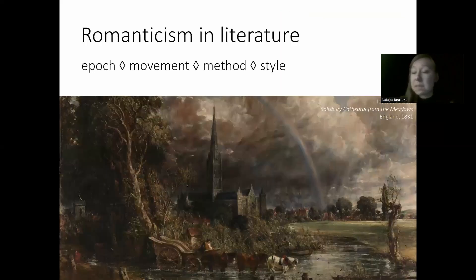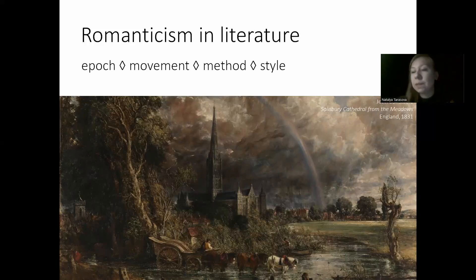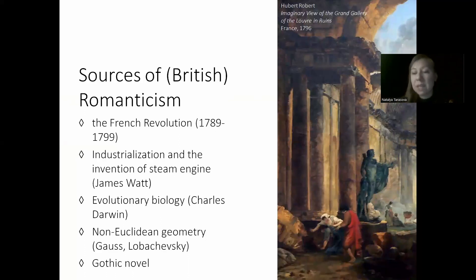Speaking of Romanticism itself, it was an epoch from around 1789 up to the 1830s in Britain and around Europe — a literary movement that united different writers with common literary views, for example Wordsworth and Coleridge, Byron and Percy Shelley and Mary Shelley and so on. It was also a method, a unified system of aesthetic tools of creating literature, and also a style, a form in which literature was written. It started off with the disappointment in the French Revolution. Liberty, equality and fraternity were aspired for but never achieved. A lot was damaged and lost instead, and freedom was the hardest loss. Hence the romantic conflicts between the real and ideal, the restraints and freedom.